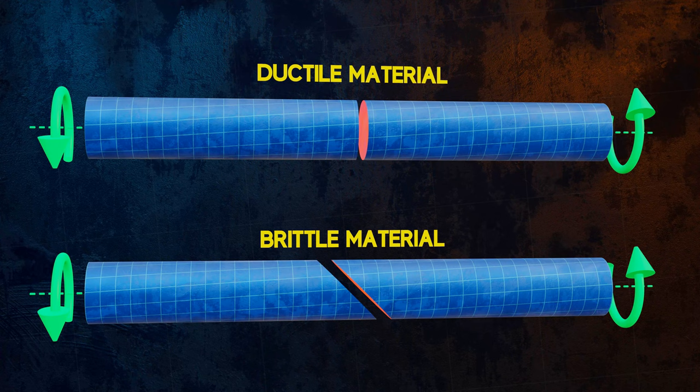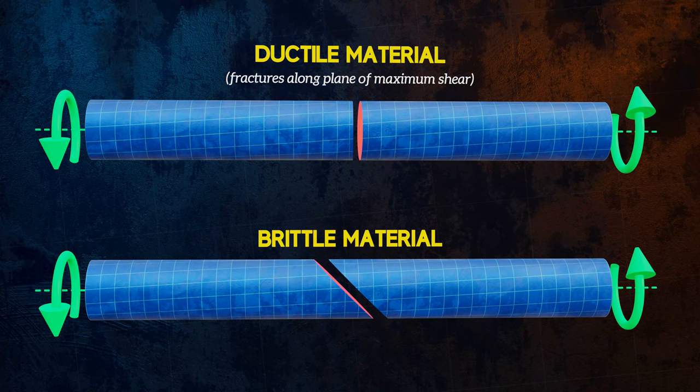But brittle materials are weaker in tension than in shear, and so tend to fracture along the plane of maximum tensile stress.